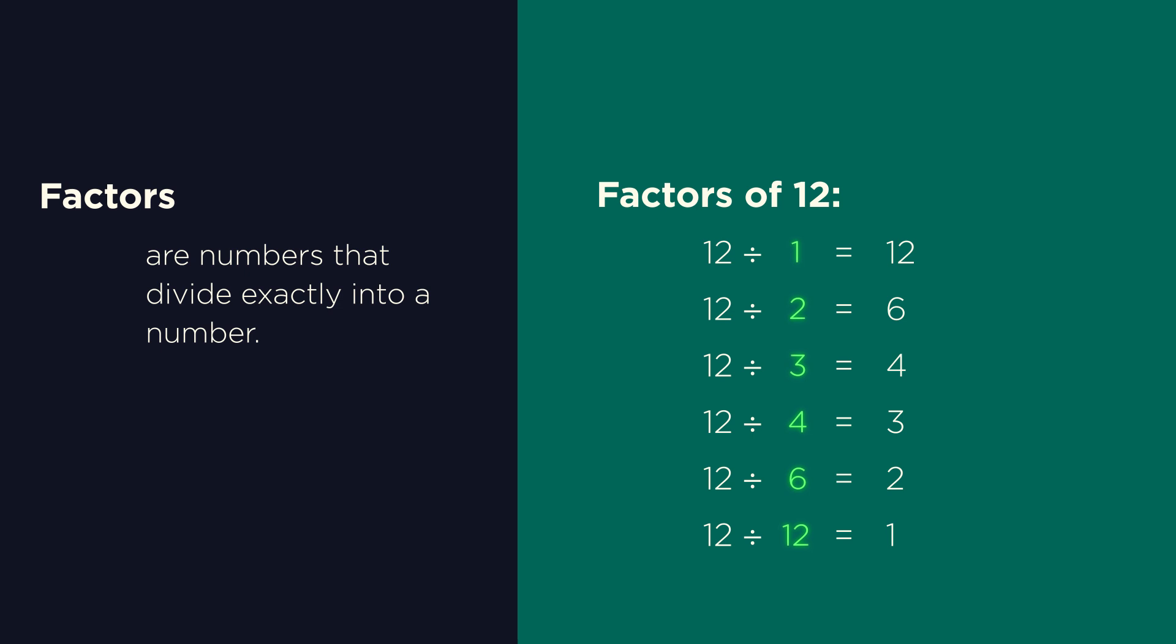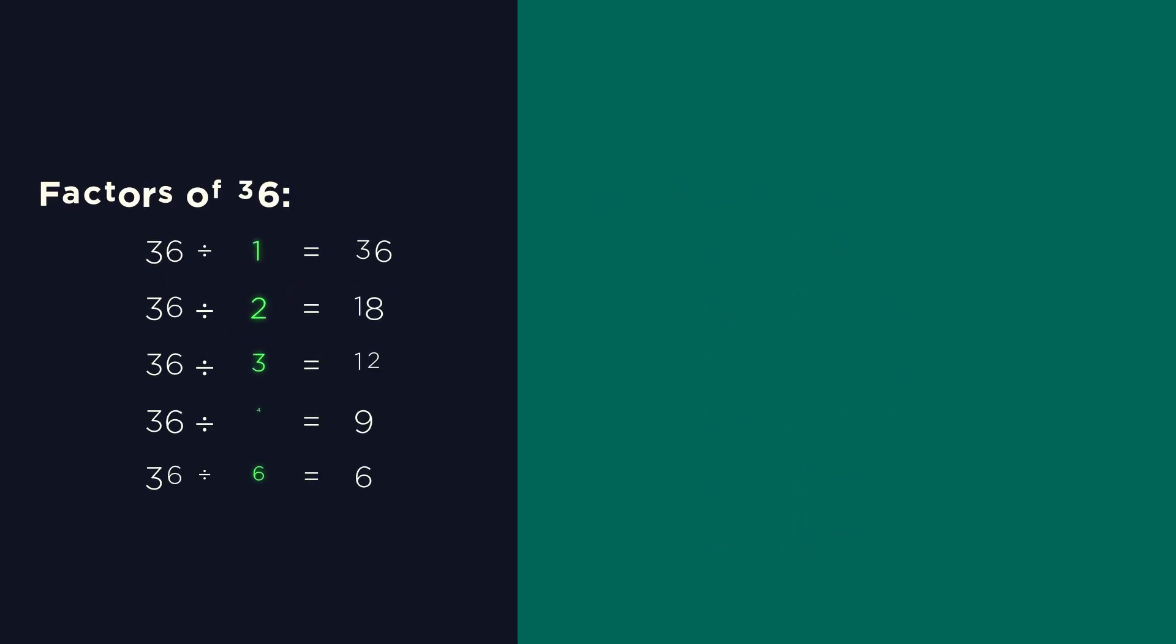It's quite easy to miss out some factors. So usually I start at 1 and work my way up. So let's look at the factors of 36. 1 and 36. 2 and 18. 3 and 12. 4 and 9. 5 doesn't go into 36. 6 and 6. So I've met in the middle. This means that I have got all the factors of 36.